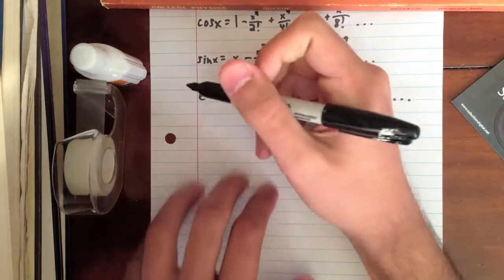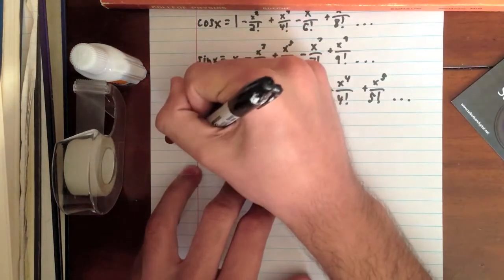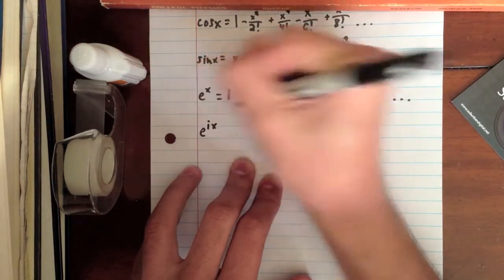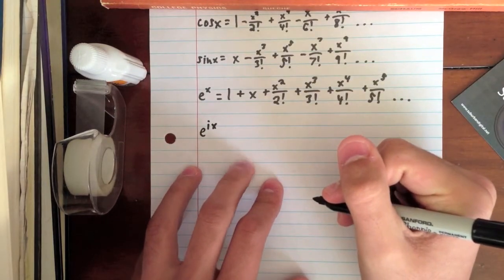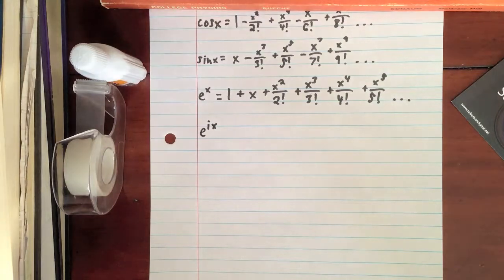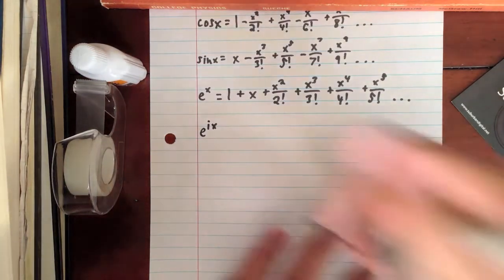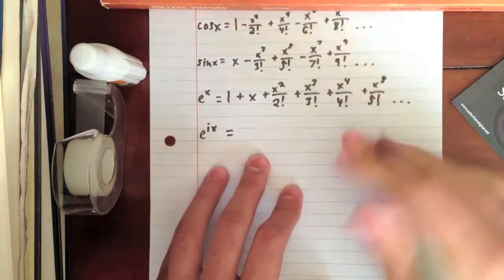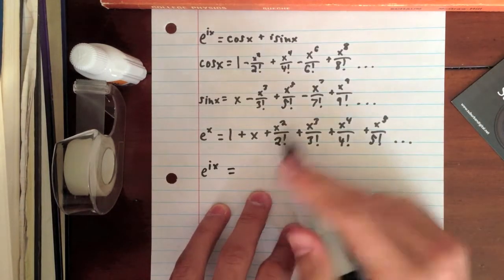Okay. Now, if we take e to the ix, which is the start of Euler's formula, all we have to do is the Taylor series and substitute ix wherever we see x. So, let's start that. There is the Taylor series right here.